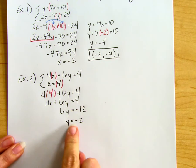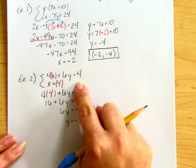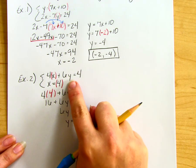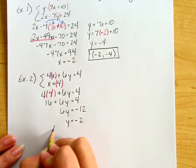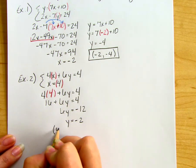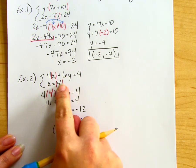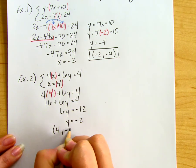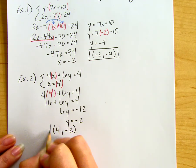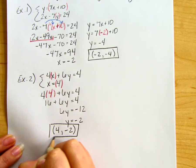In this case, I don't need to plug this back into the second equation because it was already solved for x. The x value of my ordered pair is 4, and I solved for y = -2. So the solution to this system is (4, -2).